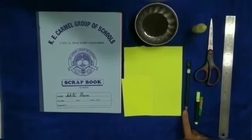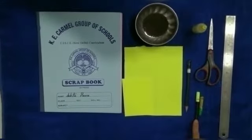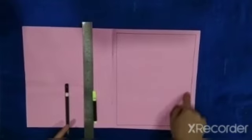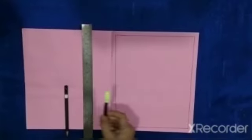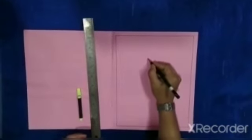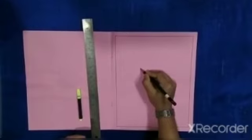pencil, black sketch pen, and crayon. So let's start our activity. First of all, we have to make an outline with this black sketch pen and scale. Now I will make a sunflower with the pencil.